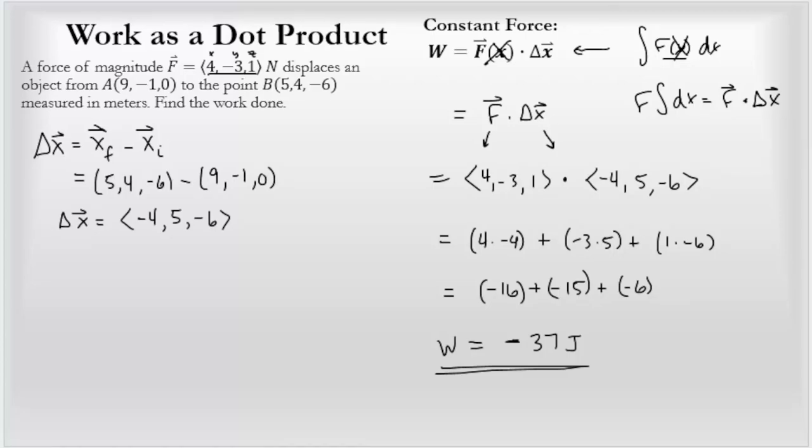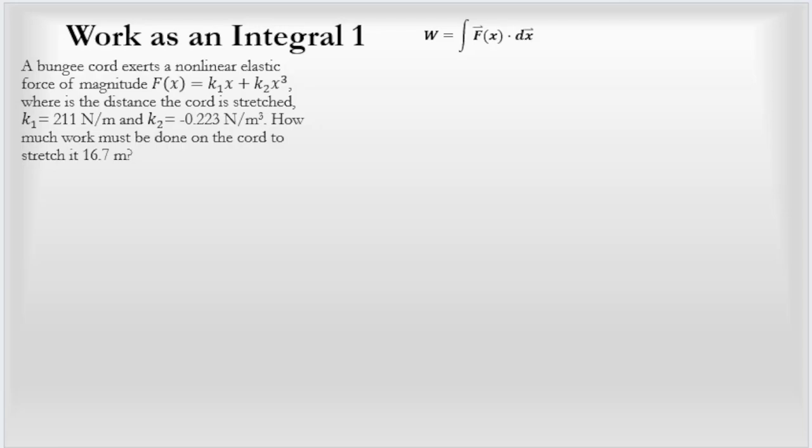I picked a couple more examples where we're actually going to have to do a little more work to calculate the work. Work as an integral—we're actually going to integrate on these. It says a bungee cord exerts a non-linear elastic force of magnitude k₁x + k₂x³, where x is the distance the cord is stretched. k₁ is some value, k₂ is another value.